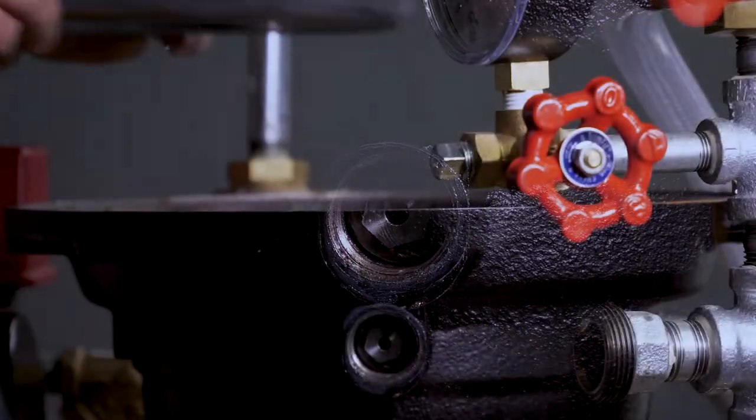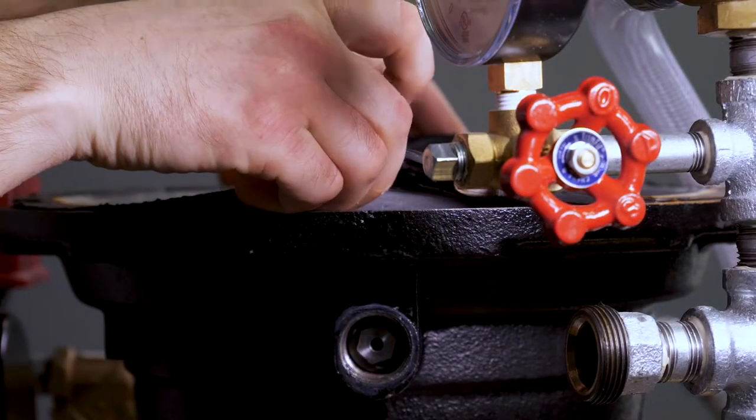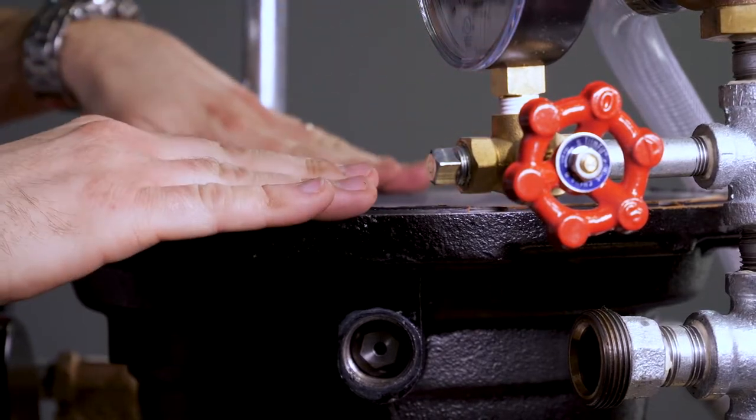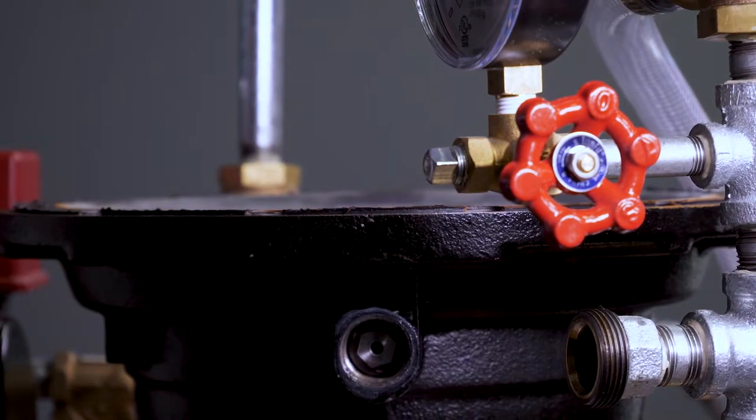Now replace the existing internal check diaphragm back into the body of the valve, making sure to line up the holes of the gasket with the holes in the body of the valve.